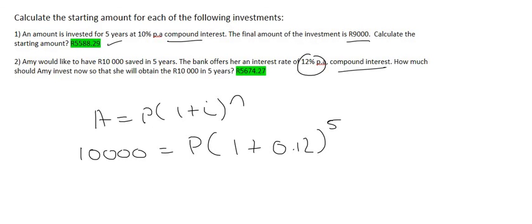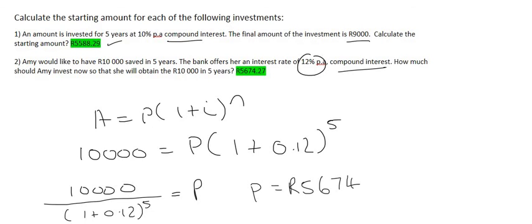What you then do is, to get P by itself, you divide the 10,000 by the whole bracket with the little exponent of 5. Type that all in on the calculator, and you'd get a final answer of 5,674 Rand and 27 cents.